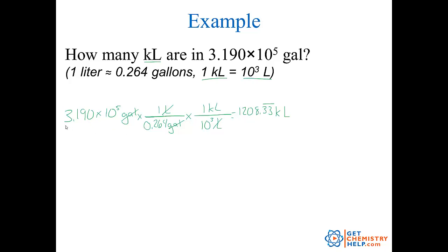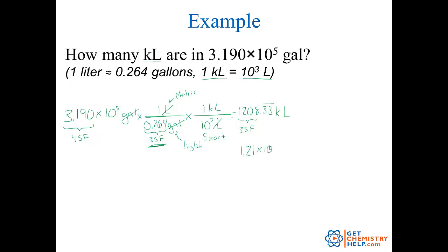How about our significant figures? This was a measurement, so it has 4 significant figures. How about 0.264? Liters are metric and gallons are English — so English to metric, somebody had to measure that, so this does have significant figures: 3 significant figures. How about kiloliters to liters? Kiloliters and liters are both metric, so this one is exact. So: 4 sig figs times 3 sig figs times exact — the fewest is 3. So our answer can only have 3 significant figures. The 8 tells me to round off, and the best way to write that would be 1.21 times 10 to the third kiloliters — which has 3 significant figures.